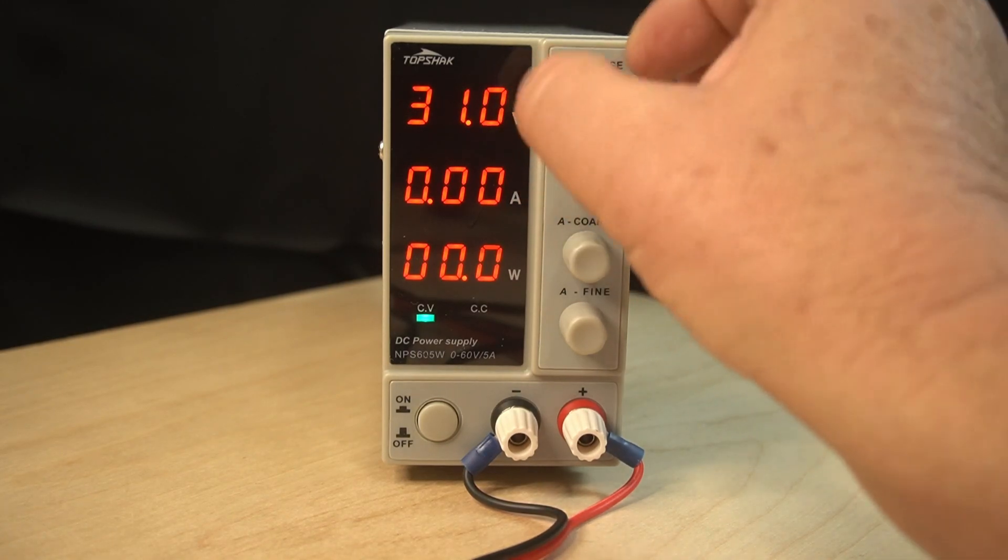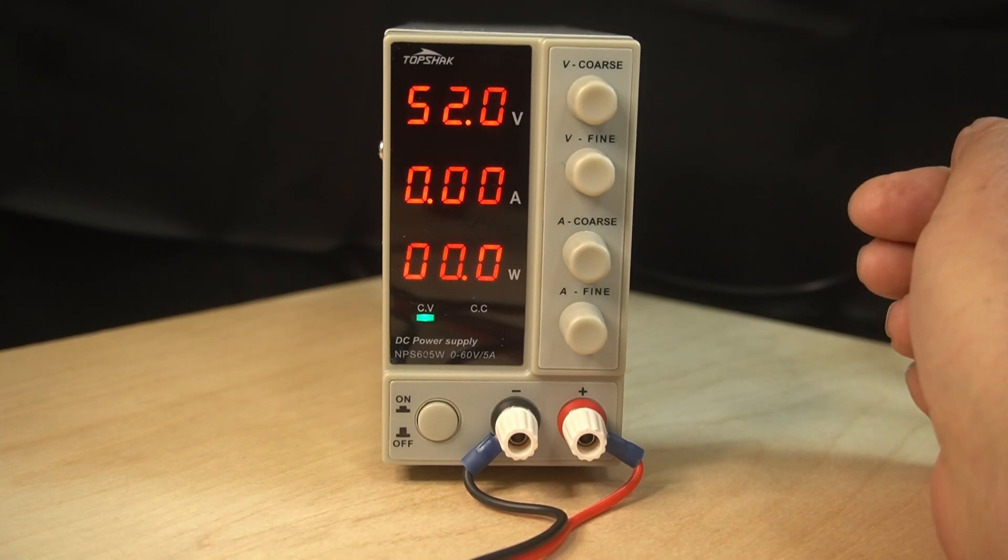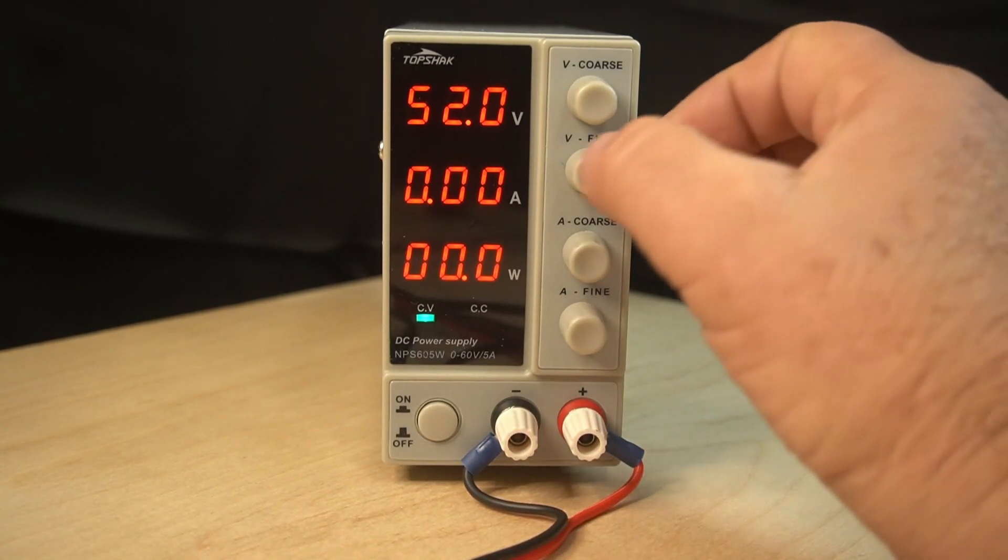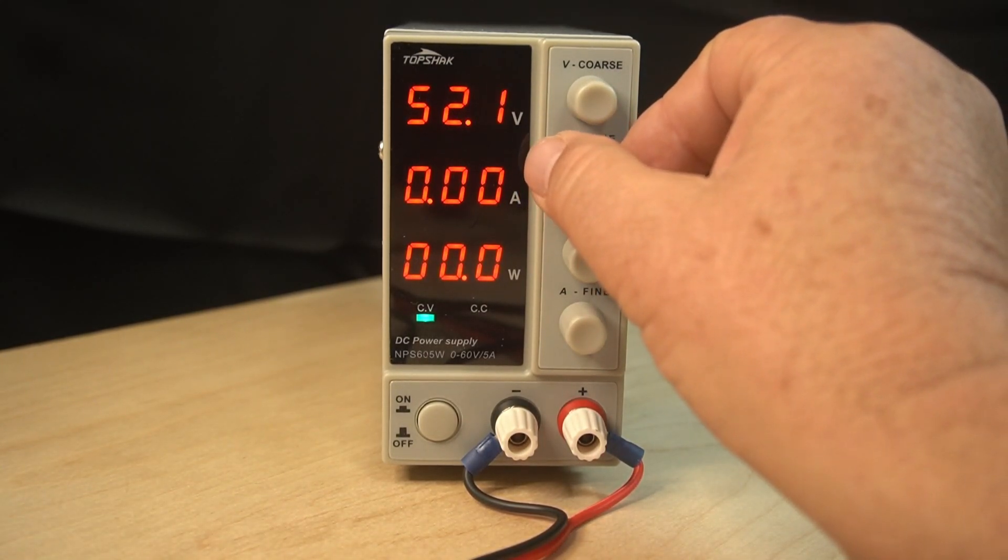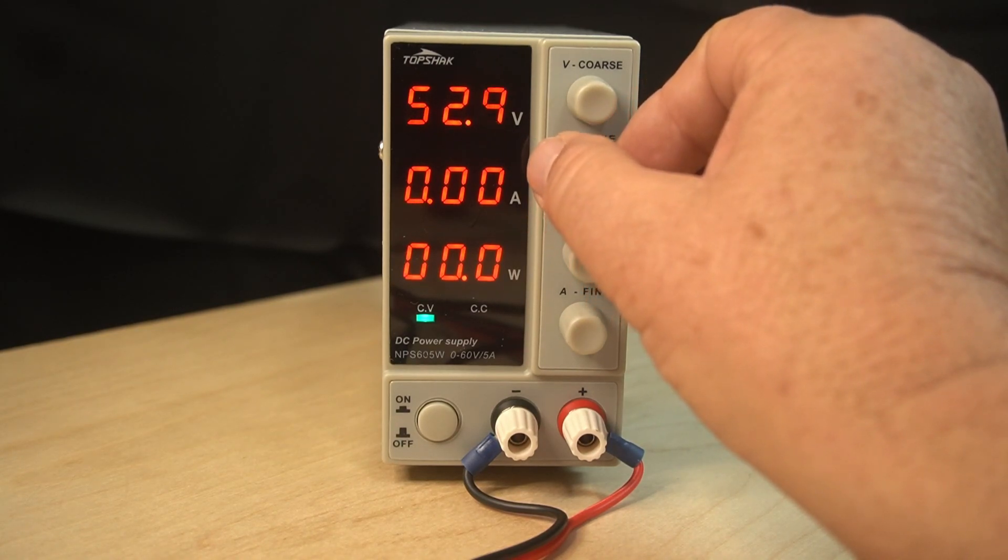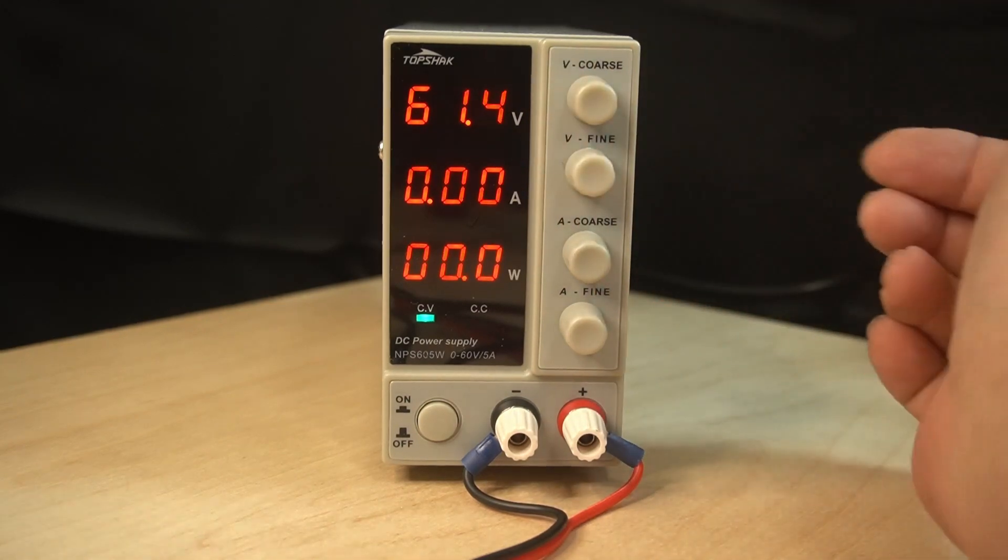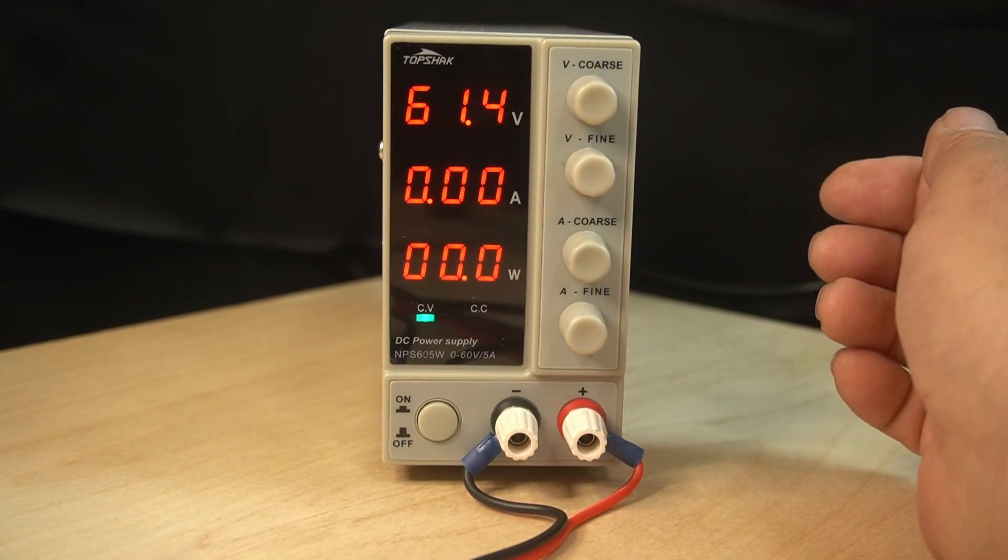I'm going to turn the fine all the way down. We're just going to turn this all the way up. So there's all the way up on the course. So it's 52 volts. And to get your 60, you just need to bring the fine up. And so it's 61.4 volts.